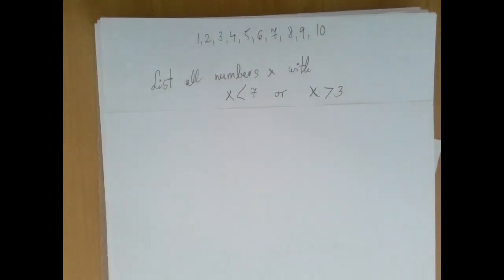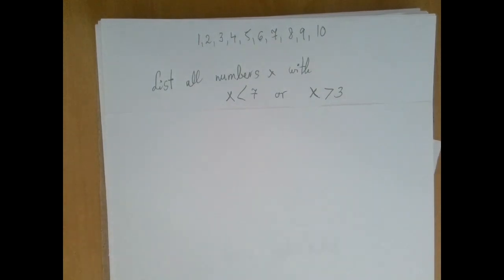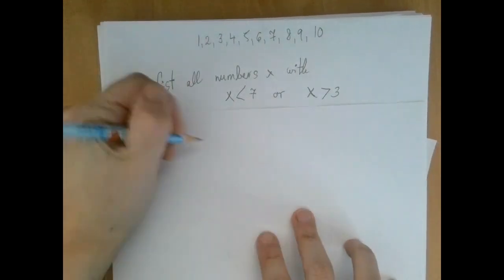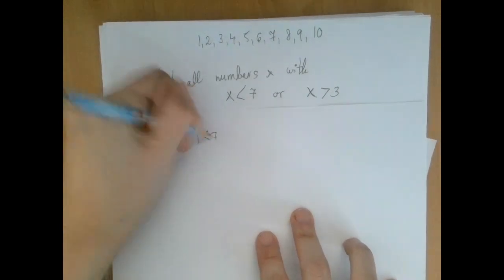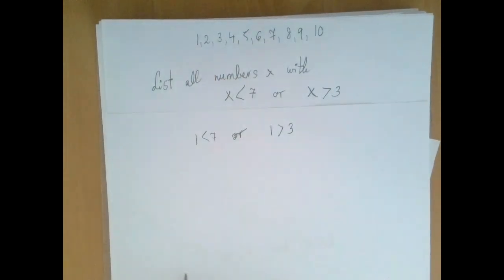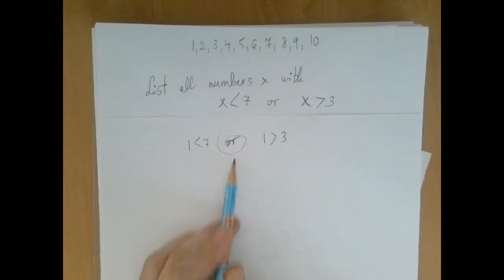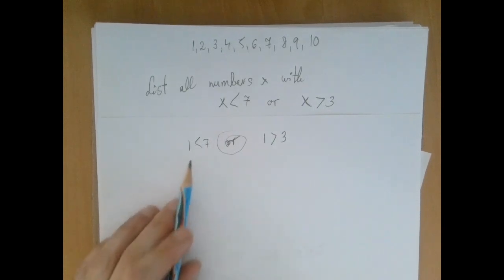Our first approach should be let's test every single one of them. So here is the statement. Let's test whether this is true for 1. One is less than 7 or one is greater than 3. Because the word between them is or, that means that the statement is true if just one of them or both of them are true, and one is less than 7. So we found one to be on this list.